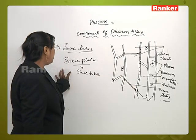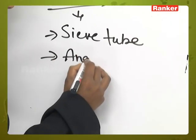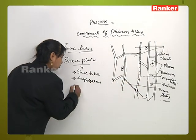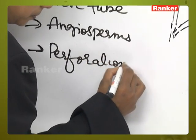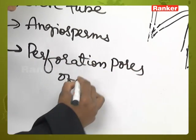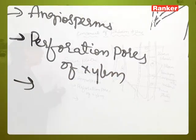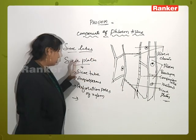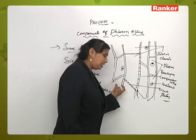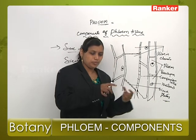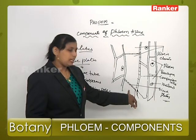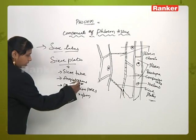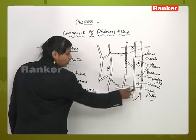Sieve plates appear only in angiosperms. These sieve plates are comparable to the perforation plates of xylem. Sieve plates are plate-like structures that help in the connection between one sieve cell or one sieve area and another. Basically, it is like a bridge-like pattern present in the form of plates. The connecting strands through the connection between two sieve areas are called sieve plates.